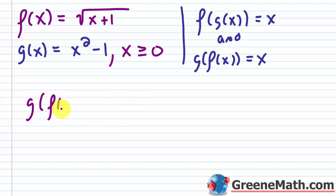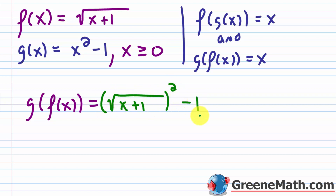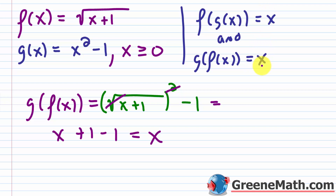Now erasing that and doing the other direction — g of f of x: substituting in, we get the square root of x plus one, that quantity squared, minus one. You can cancel the square and square root, giving x plus one minus one, which equals x. No issues there. That's why it's very important to check both compositions — especially on something like the SATs or ACTs, these are common traps they know you'll make mistakes on.